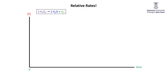For example, consider this simple reaction: 2H₂O₂ → 2H₂O + O₂. This tells us that when two moles of H₂O₂ come together, they make two moles of H₂O and one mole of O₂. Every time I make water, I use up an H₂O₂. Every time I make an oxygen, I use up two H₂O₂s. That's what the stoichiometry is telling us.